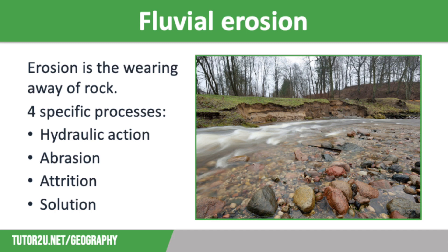We also have abrasion. This is where small boulders and stones being transported by the river may scratch and scrape the riverbanks and beds. Stones which have recently fallen into the river have angular, sharp, jagged edges and are particularly good for abrasion. Ongoing abrasion is responsible for both vertical and lateral erosion.